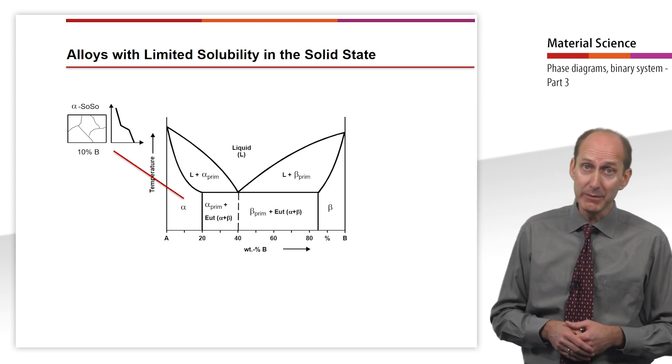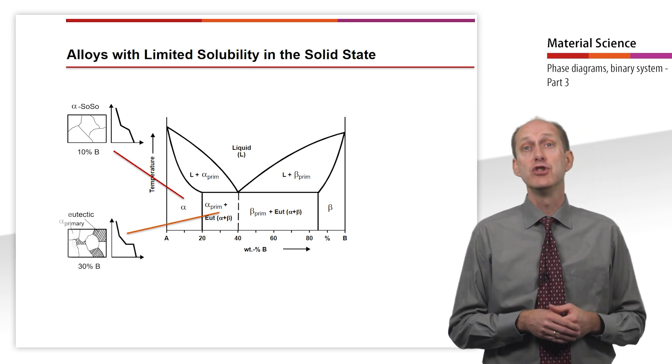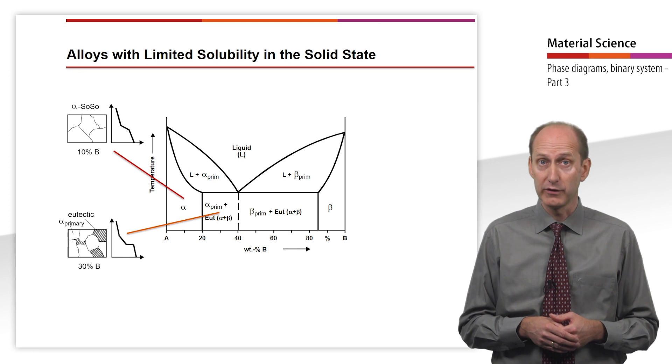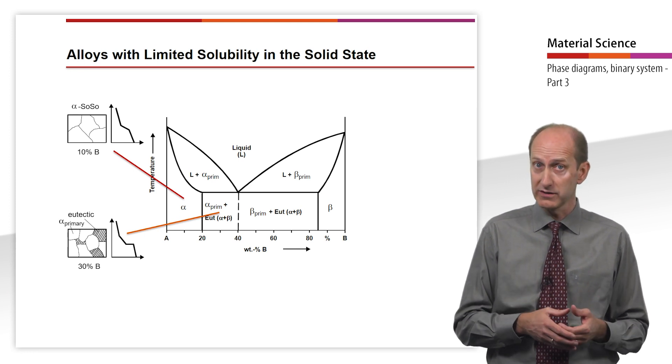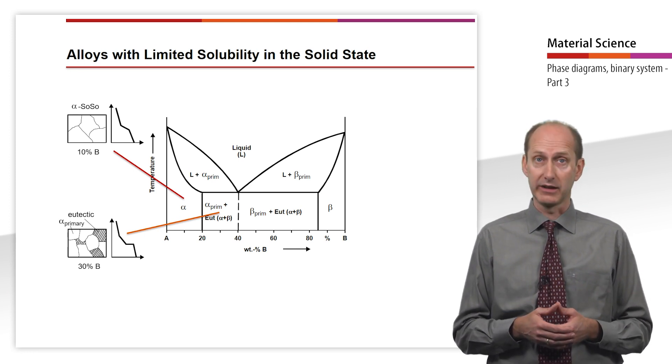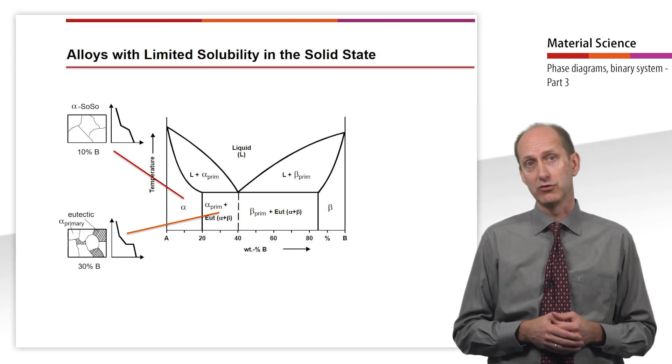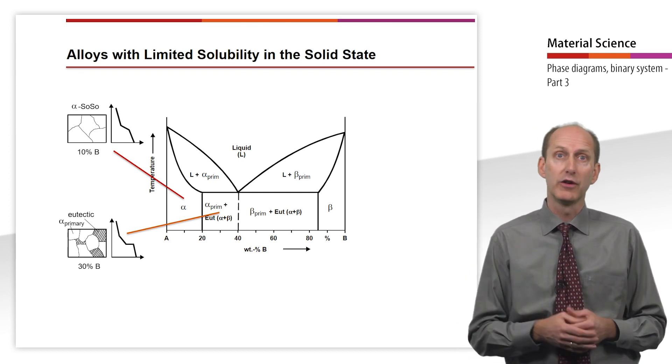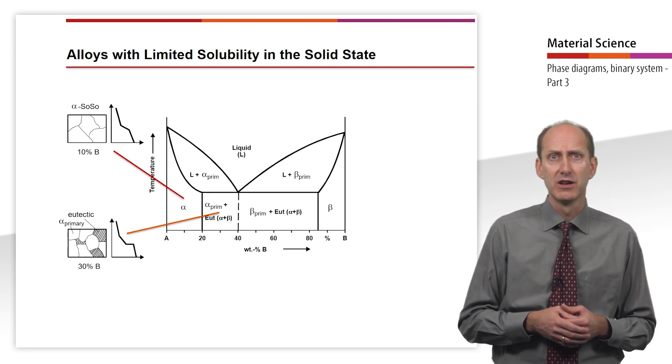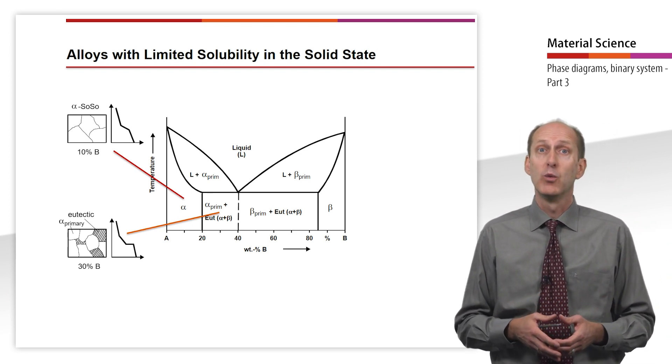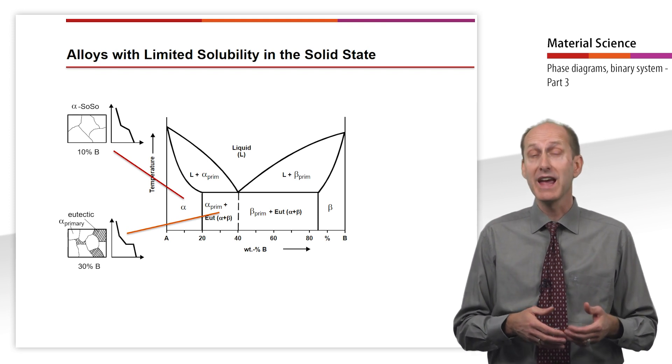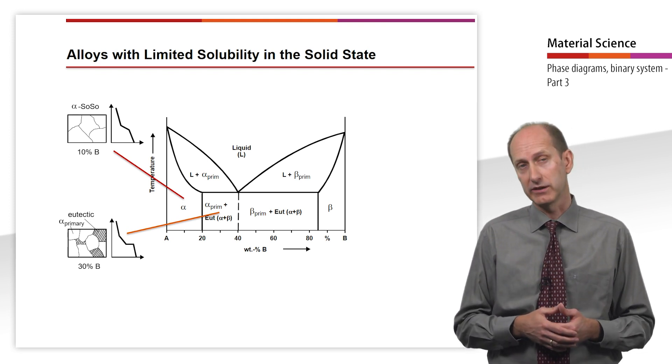Above the solubility limit, the micrograph not only shows the primarily solidified alpha solid solutions, but also eutectic, consisting of alpha and beta solid solutions. The cooling curve from the thermal analysis shows a breakpoint where the temperature falls below the liquidus and an arrest point at the eutectical.